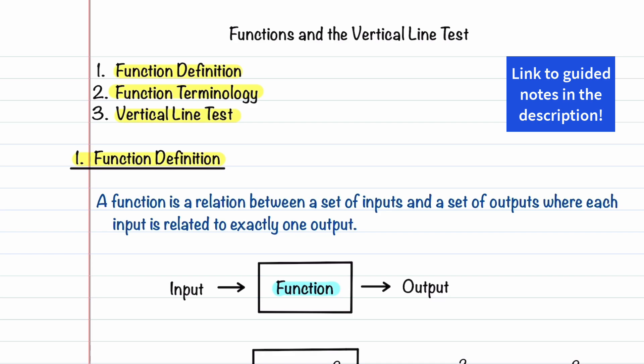A function is a special kind of relationship between inputs and outputs. Specifically, each input is related to exactly one output. This means if you give a function a value, it will always produce only one result.